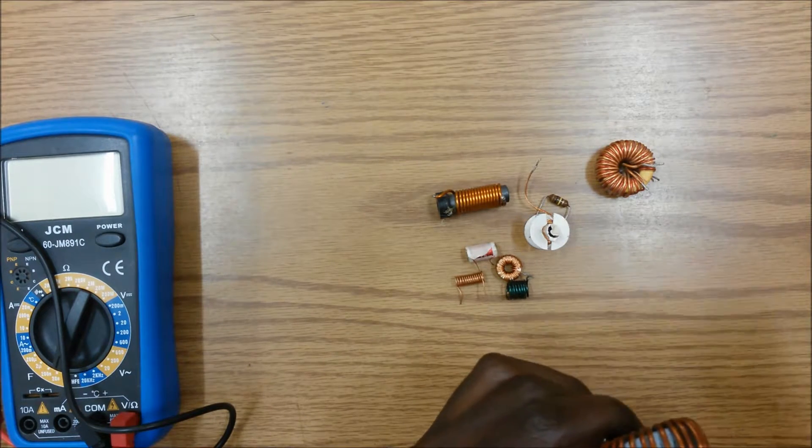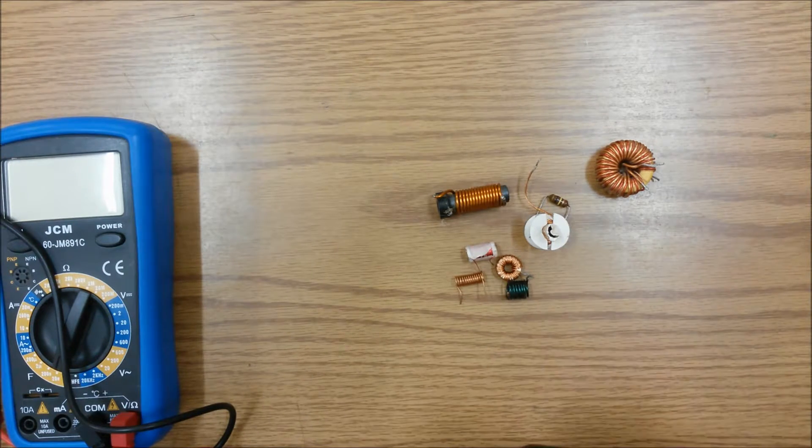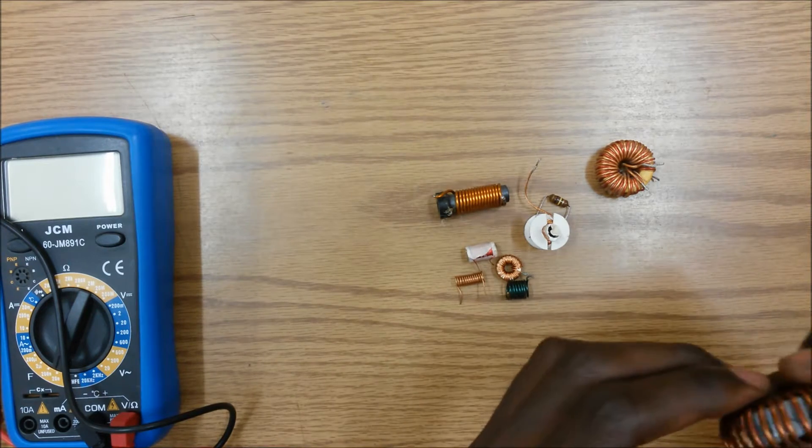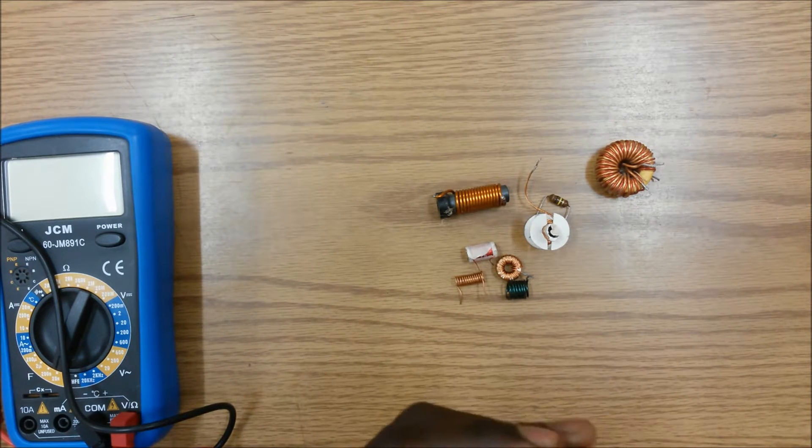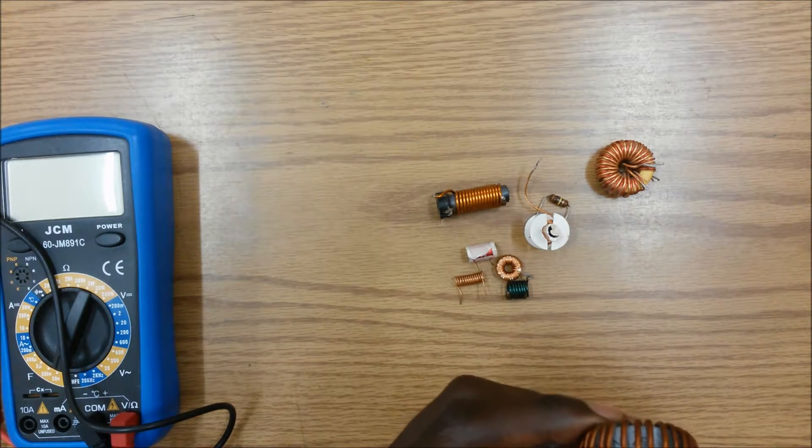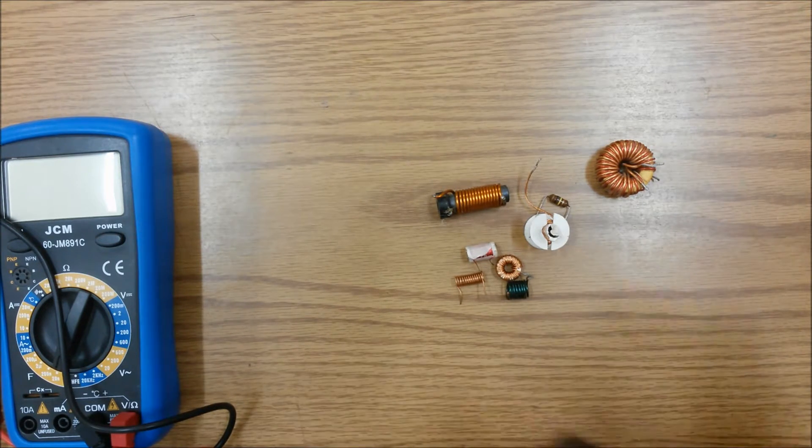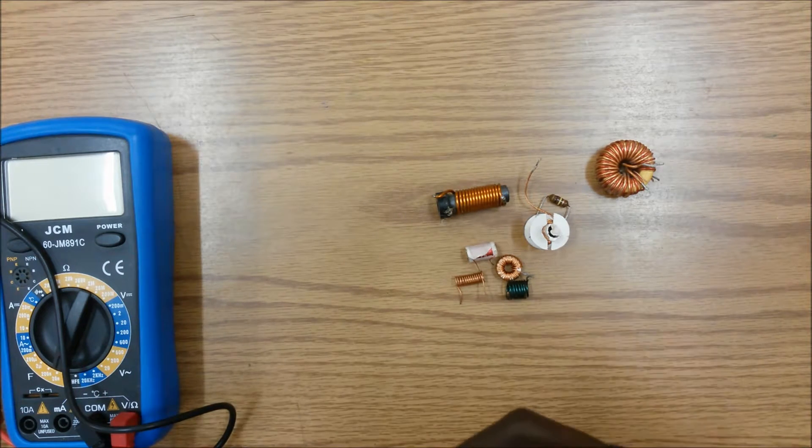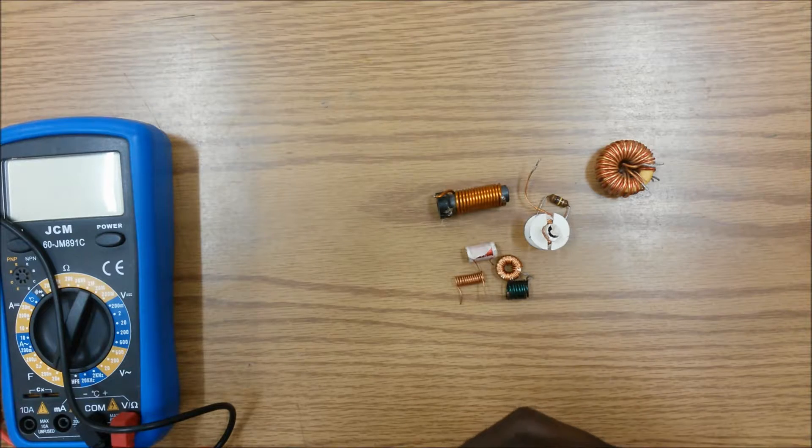Now if we were to remove that current source by disconnecting the circuit, that magnetic field around the inductor would collapse, causing current to flow in the opposite direction, which is the basis on which we say that an inductor stores electrical energy in a magnetic field.